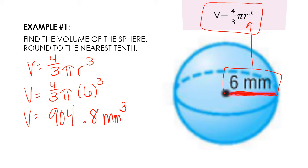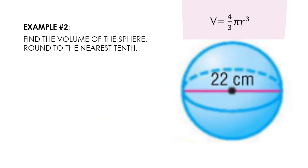Now let's look at example number two. It says find the volume of the sphere, round to the nearest tenth. On this example, you should notice a really big difference — this is no longer the radius, but they are giving the length as the diameter. Remember, when I substitute, I need the length of the radius. The radius is half the diameter. So, what is half of 22? Half of 22 is 11, so my radius is going to be 11 centimeters.